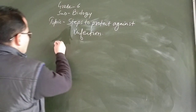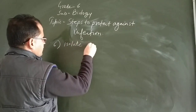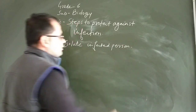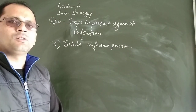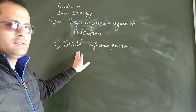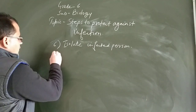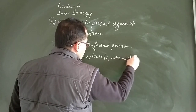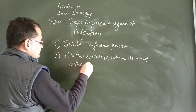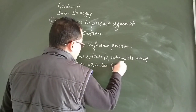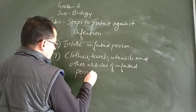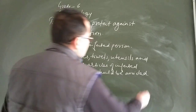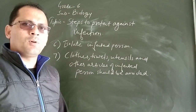Next, you have to isolate the infected person — that person should be kept alone, because the infected person carries a lot of germs. The clothes, utensils, and other articles of the infected person should be avoided. If you use them, the germs present on those articles will come in contact with your body and make you diseased.